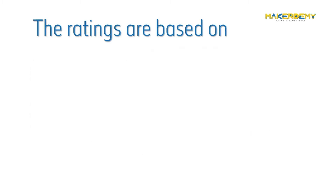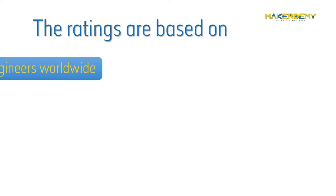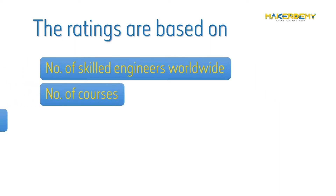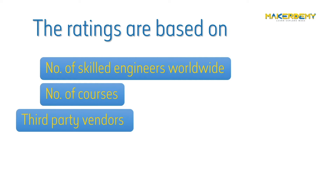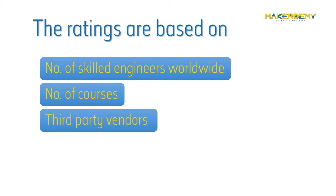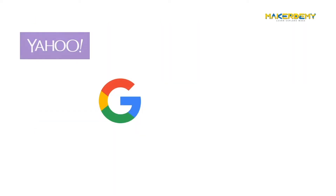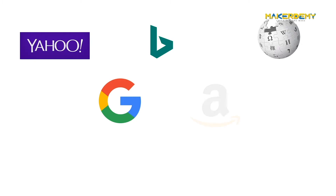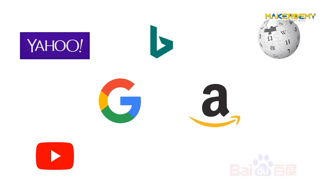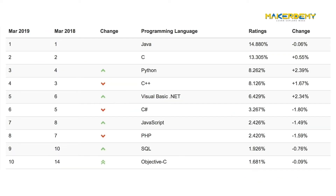The TIOBE ratings are based on factors like the number of skilled engineers worldwide, courses, and third-party vendors. Popular search engines such as Google, Yahoo, Bing, Wikipedia, Amazon, YouTube, and Baidu are used to calculate the ratings. The TIOBE index has ranked Python in the third place.